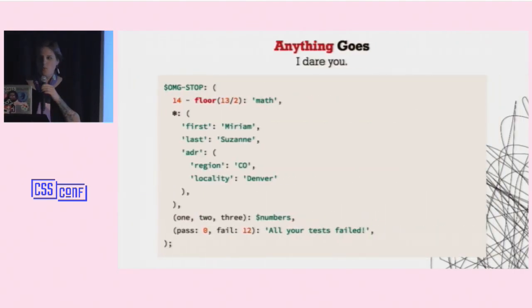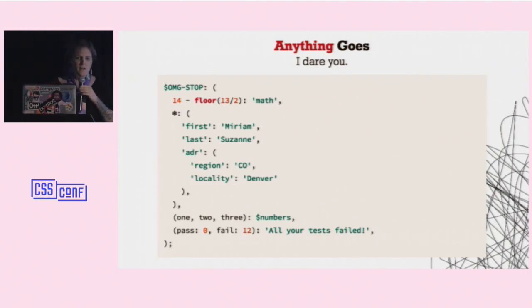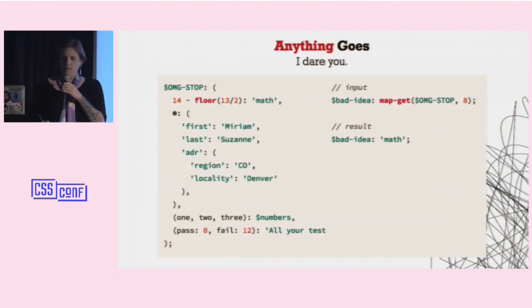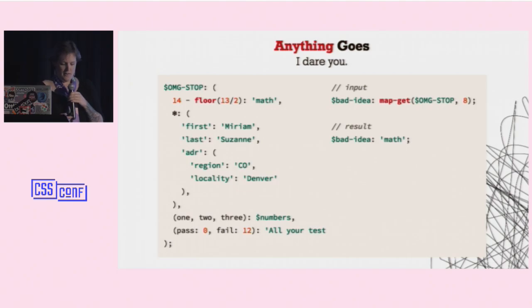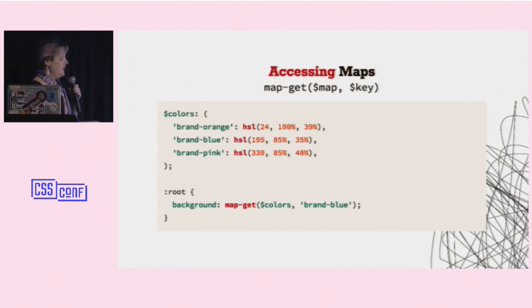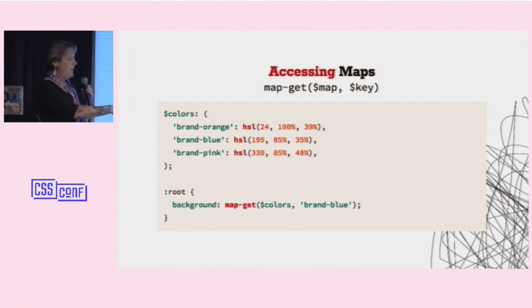So you can do anything you want inside of a map. They can get a little bit crazy, and I dare you. This is a terrible idea. There is no reason to do most of this. I love this one. You can use math as the key. And you can actually call that, map get omg stop 8. 8 is the result of that math. It works. You can use emoji. You can use anything you want in there. To get something out of a map like you saw, you use the map get function. So this is a little bit less direct than a variable. So this is one of the downsides of maps, is that to get anything out of the map, we have to both call the map and the key, so it's a little bit less direct, but map get colors, brand blue, does get us the color, and there's ways to add extra sugar around that, which I'll show you.